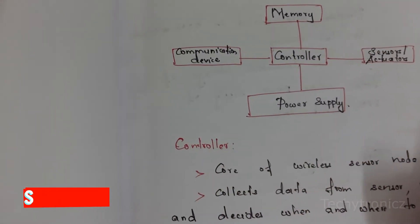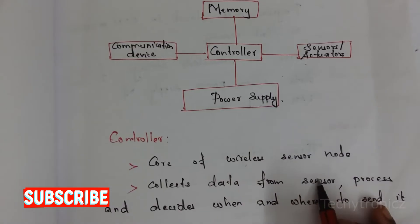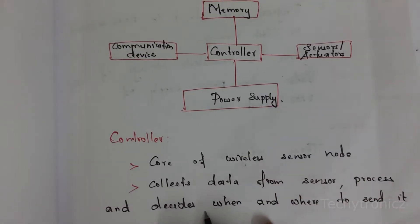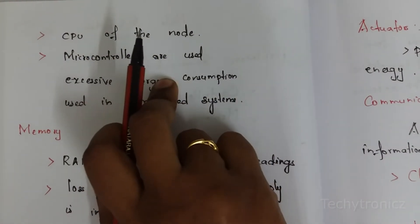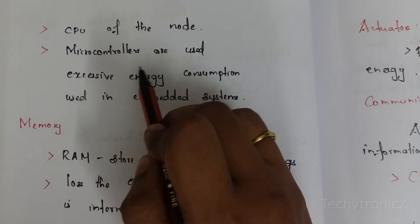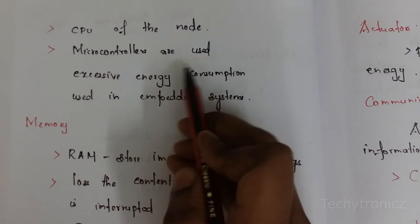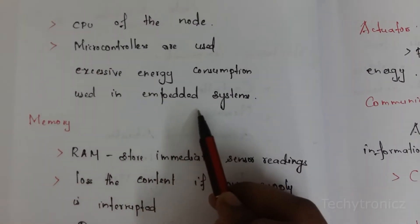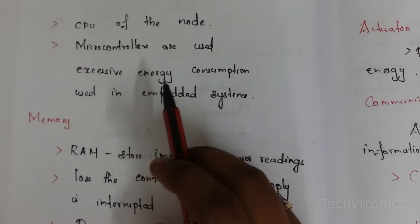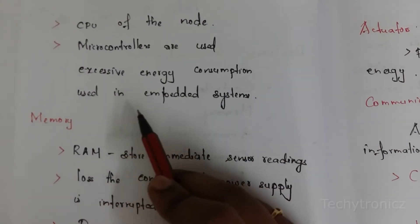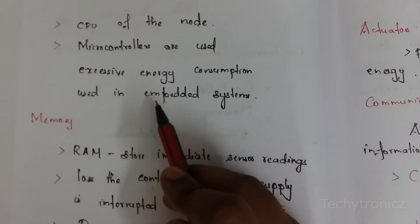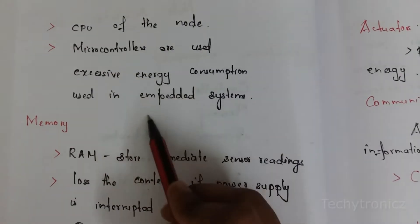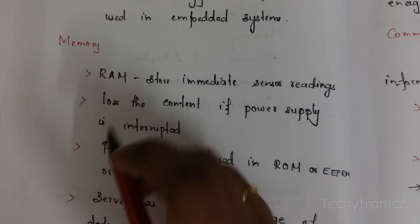The controller is the core of wireless sensor nodes. It collects data from sensors, processes that data, and then decides when and what to send. It is the CPU — the central processing unit — of the node. Microcontrollers are mainly used in embedded systems for this purpose.